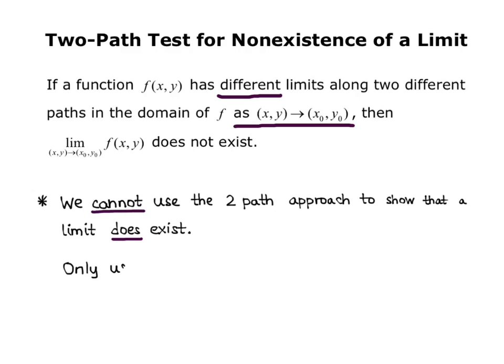We only use it to show non-existence. So you find two paths that do not produce the same z-value, and that proves that the limit does not exist.